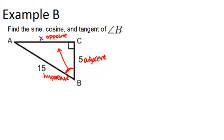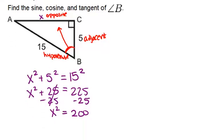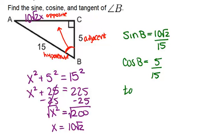I'm going to make my missing side be x. I know that x squared plus 5 squared must equal 15 squared, so x squared plus 25 must equal 225. Once you subtract 25 from both sides, you get x squared equals 200, which means x equals 10 root 2. So our last side is 10 root 2. Sine is opposite over hypotenuse: 10 root 2 over 15. Cosine is adjacent over hypotenuse: 5 over 15. Tangent is opposite over adjacent: 10 root 2 over 5.